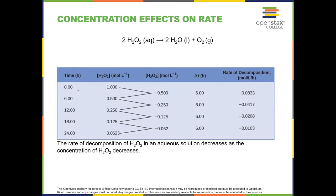Let's look at the rate of this reaction — it's a particularly long reaction with times in hours, from 0 to 24 hours. After six hours, the concentration goes from 1 molar to 0.5 molar. After another six hours it goes to 0.25, then 0.125, then 0.0625. The concentration halves each six-hour period, but notice the amount of hydrogen peroxide lost is not constant: the first six hours we lost 0.5 molar, the next six hours only 0.25, then 0.125, and so on.